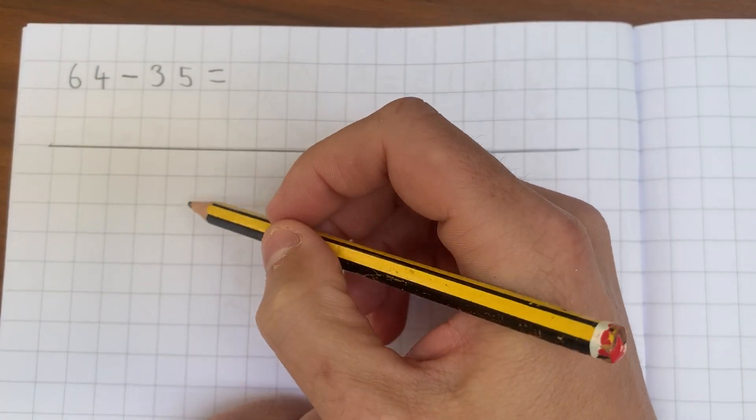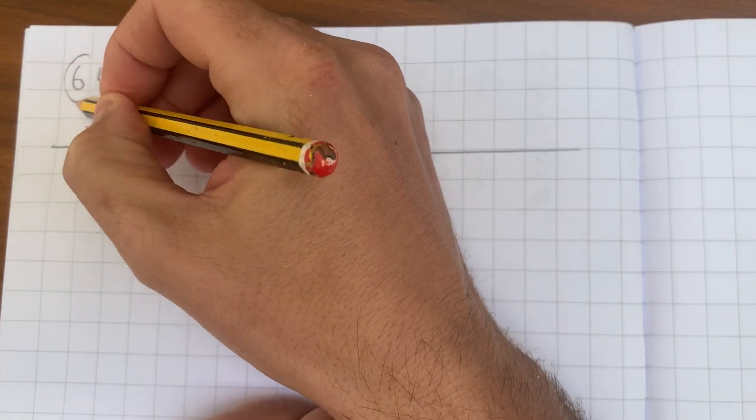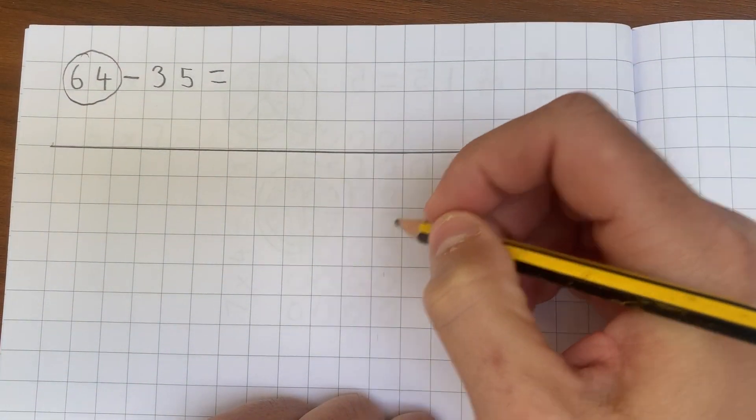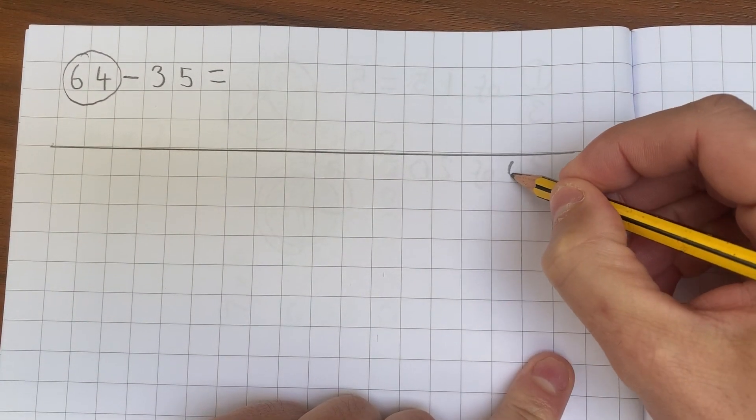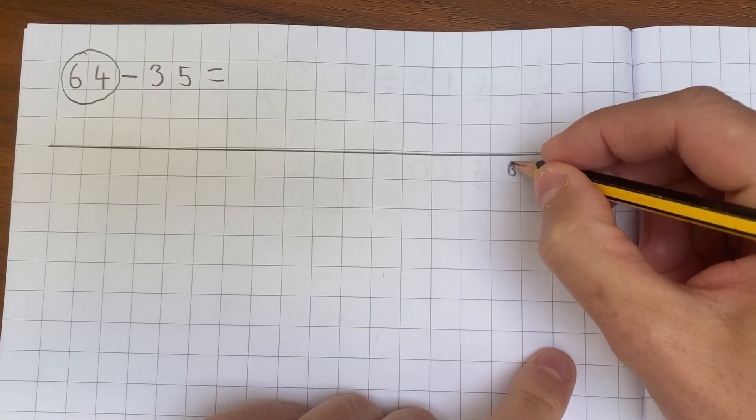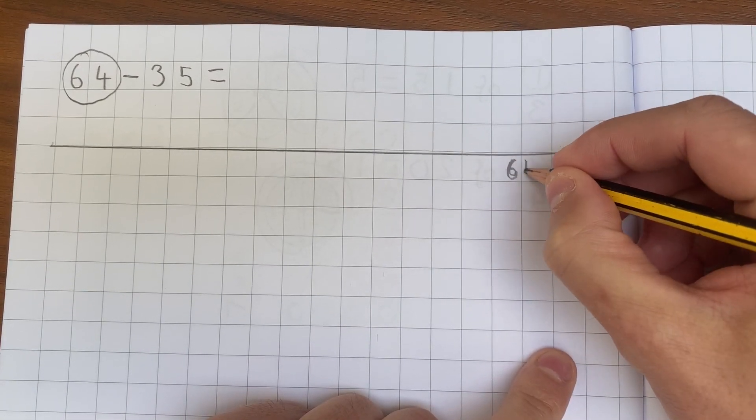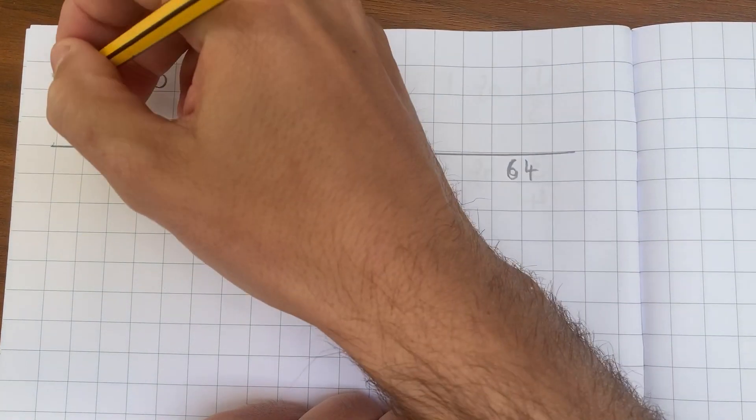Now, unlike with adding, I must always start with the first number. Because I'm subtracting, I'm going to put that at the far end of the line so that we can count backwards. So I'm going to write 64 just here. I've got my 64.